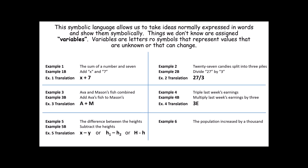The population increased by 1,000. Hopefully you recognize that the word increase means addition. So this is telling us to add 1,000 to the population — P plus 1,000.